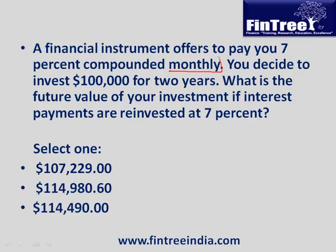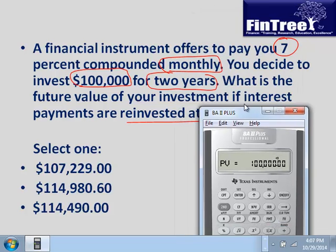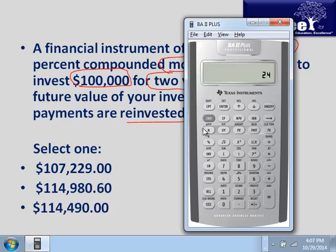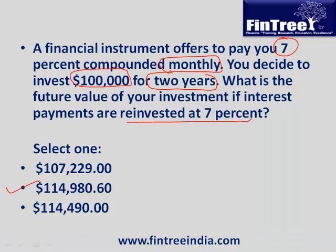A financial instrument offers to pay you 7% compounded monthly. You decide to invest $100,000 for two years. What is the future value if interest payments are reinvested at 7%? Second, clear TVM. $100,000 is the present value. Two years means 24 months since compounding is monthly, so N is 24. Interest rate per month is 7 divided by 12. Compute future value — the answer is $114,980.